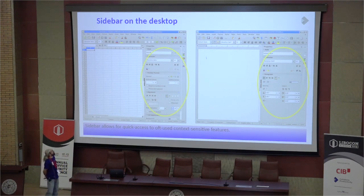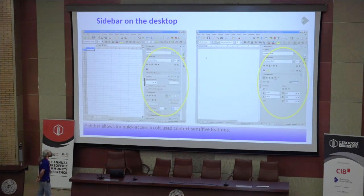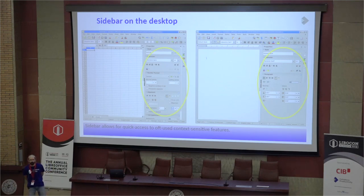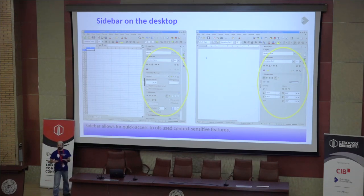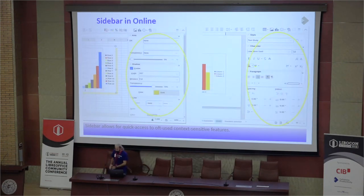So what is a sidebar? On the desktop it's typically on the right side, it's docked, and you can undock it and move it around. It has all the context-sensitive properties that you would need depending on what you're doing. If you're typing text and want a quick way to change the font size, there it is. If you select an image, you get slightly different properties — it moves with you.